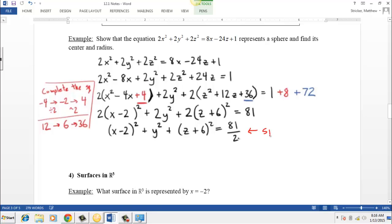So this is a sphere with radius equal to 9 over square root 2. And then the center, remember the coordinates for the center, the x, y, and z coordinates are the opposite of what we see here. So the x coordinate would be positive 2, the y coordinate is 0, and the z coordinate is negative 6.